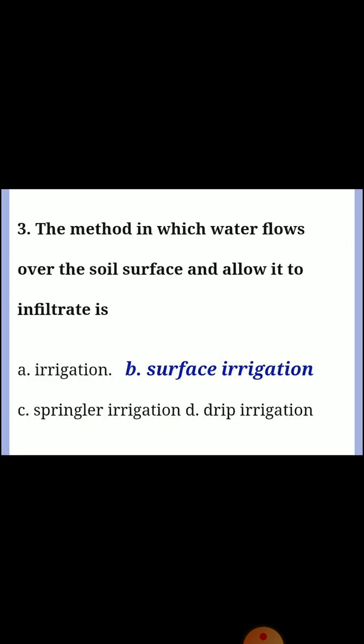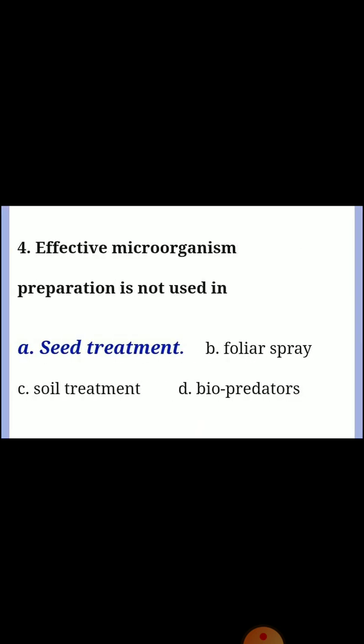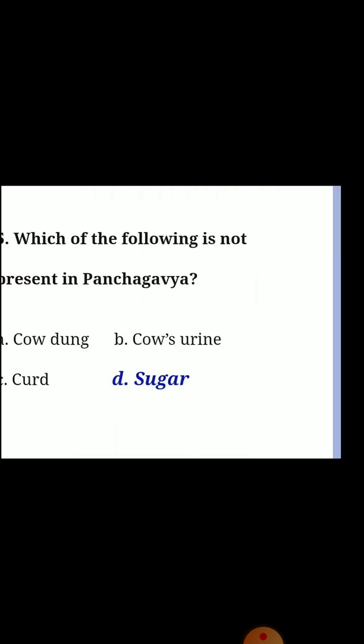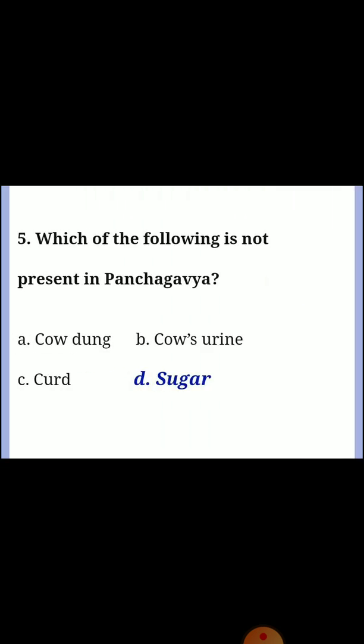Third question: the method in which water flows over the soil surface and allows it to infiltrate is? Answer B: Surface irrigation. Fourth question: effective microorganism preparation is not used in? Answer A: Seed treatment. Fifth question: which of the following is not present in Panchakavya? Answer D: Sugar.